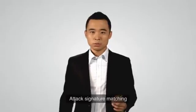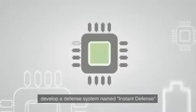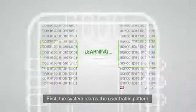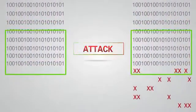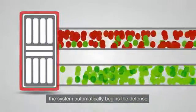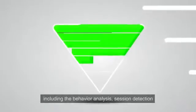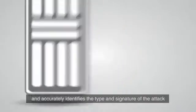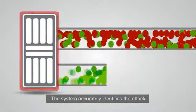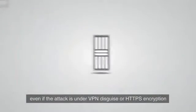Attack signature matching as the traditional method does not keep pace with ever-varying attacks. Huawei Anti-DDoS developed a defense system named Instant Defense. First, the system learns the user traffic pattern and establishes a traffic baseline. When traffic is abnormal, the system automatically begins defense, filtering traffic at seven layers including behavior analysis, session detection, and reputation matching, accurately identifying the type and signature of the attack — even under VPN disguise or HTTPS encryption.